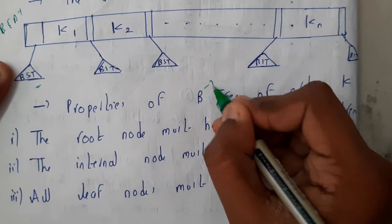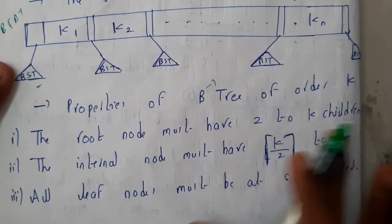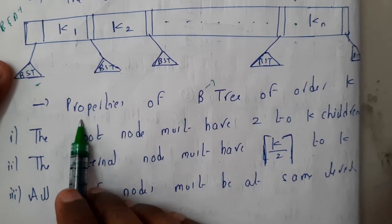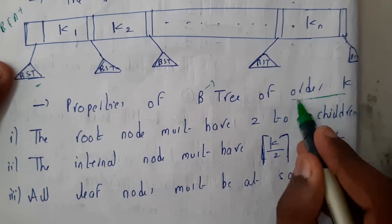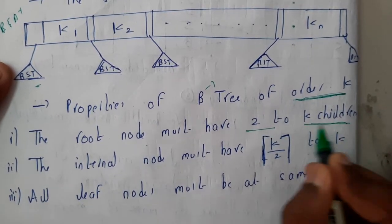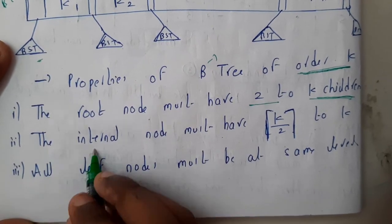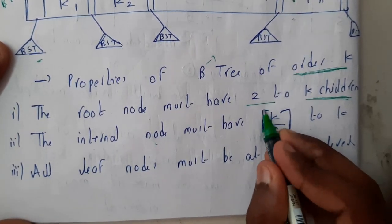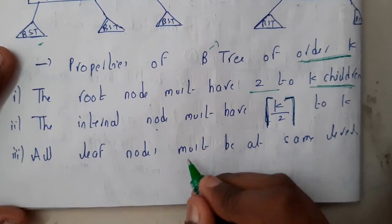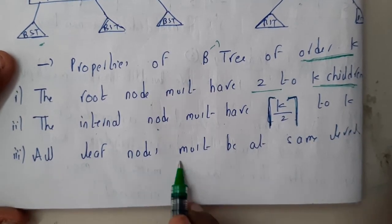Now let us go through some properties of B-tree. Remember, these are also applicable for B+ tree, so please concentrate. Spend 5 to 10 minutes and understand what these points are saying — those are the important things you should remember. The properties of B-tree of order k — we are assuming the letter k. The root node must have 2 to k children. An internal node must have ceiling of k by 2 — that is the ceiling value, so even if you get 2.5 or 2.1, you take the maximum value, which is 3 — up to k children.